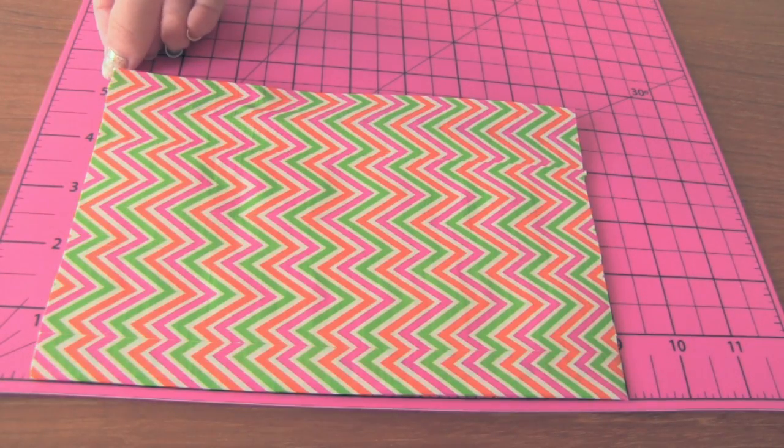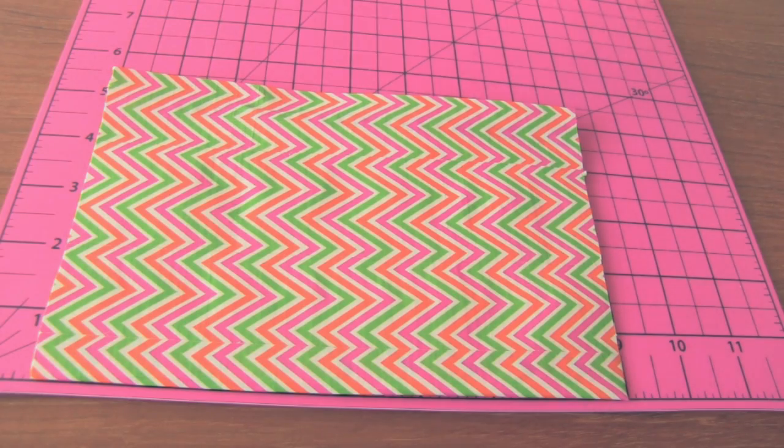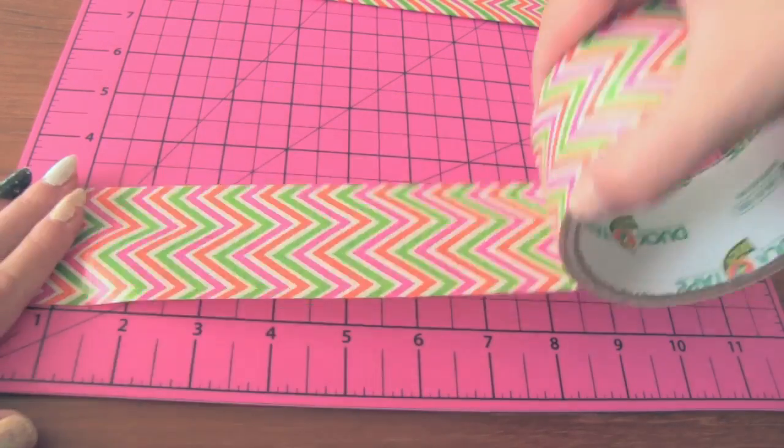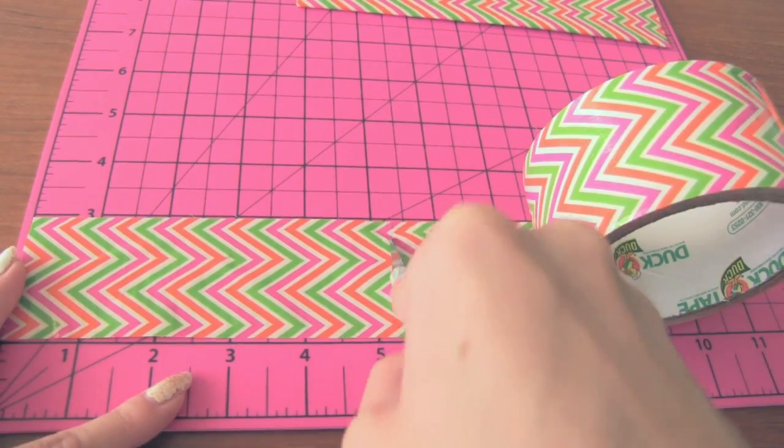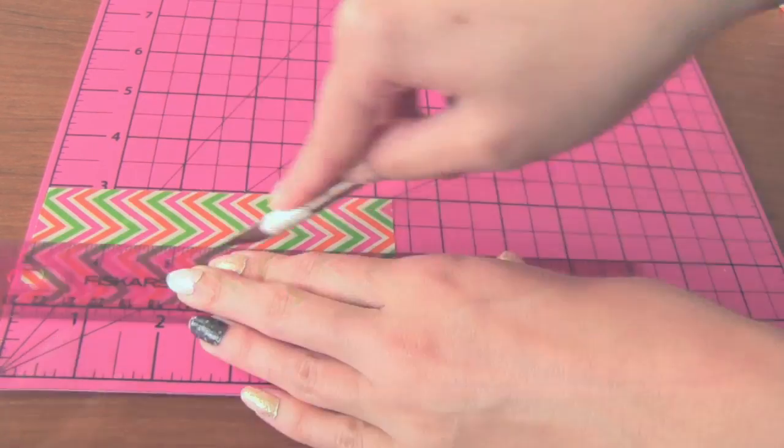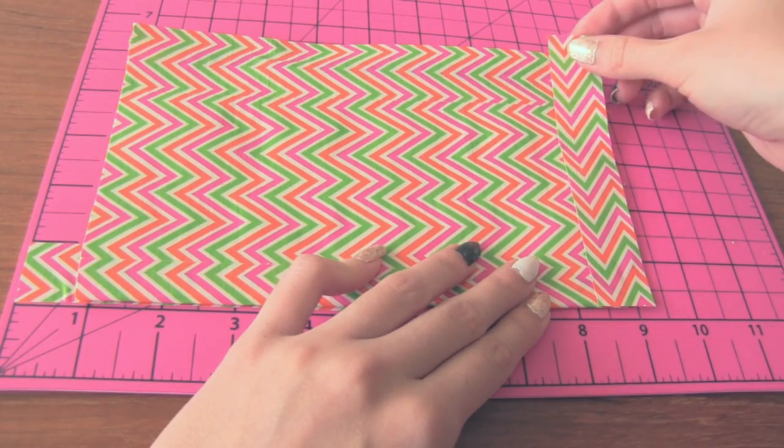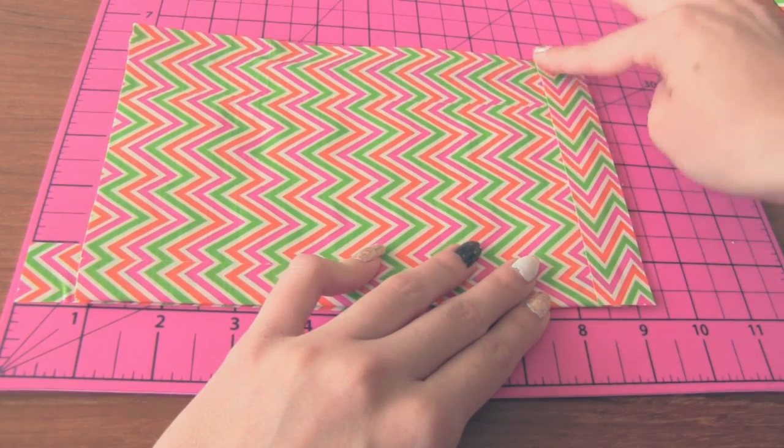My pouch is just a little bit over 5 inches maybe 5 and 1 fourth. So I'm going to cut a strip of duct tape that's about 5 and 1 fourth inches long. Then I'm going to cut this strip in half the long way.